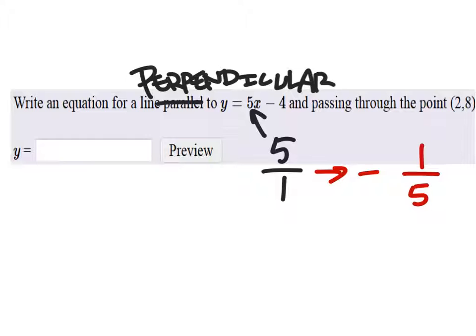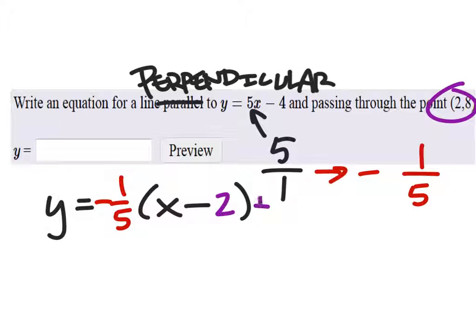That's great, because now we get to use point-slope form to find the equation in slope-intercept form. So, we have our slope is negative 1 fifth, and the point we have here is 2, 8.